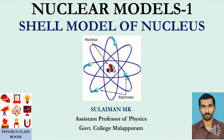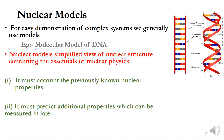Good morning friends. Today we will discuss the shell model of nucleus, its evidences, etc. For easy demonstration of complex systems like the nucleus, we generally use models. For example, the molecular model of DNA — its double helical structure represents the original DNA. Similarly, a nuclear model is a simplified view of nuclear structure containing the essentials of nuclear physics.